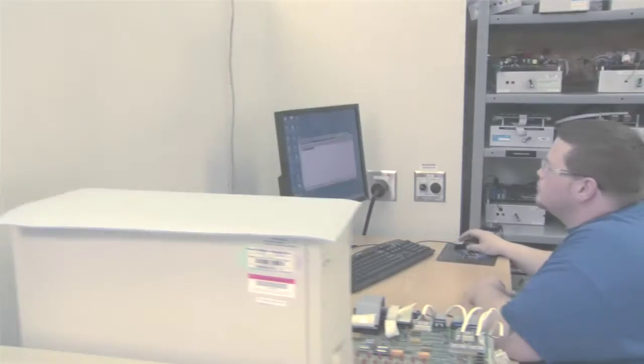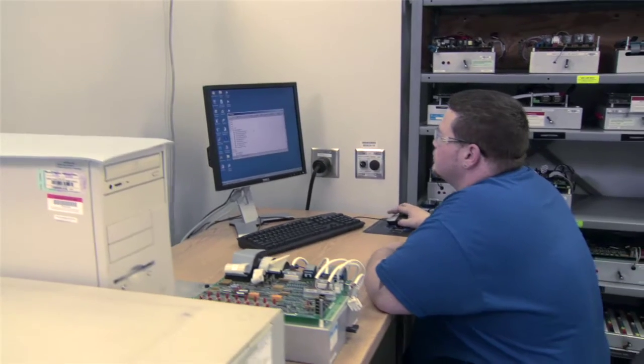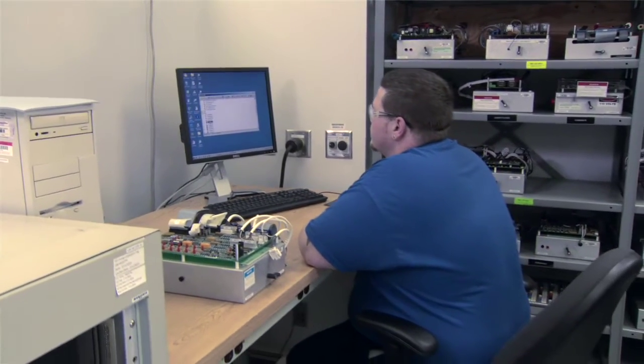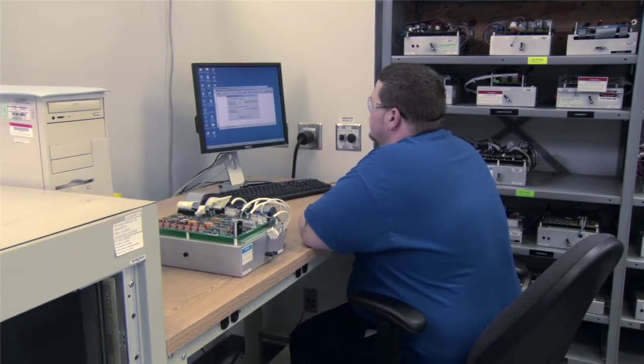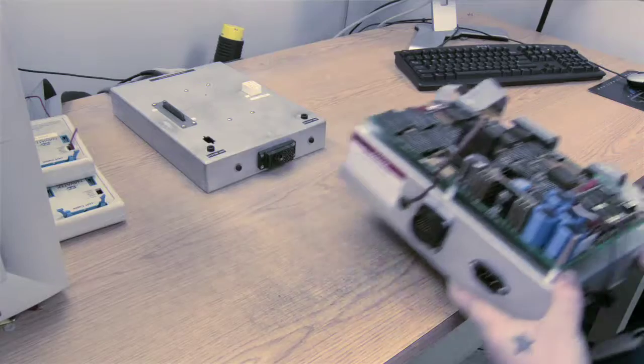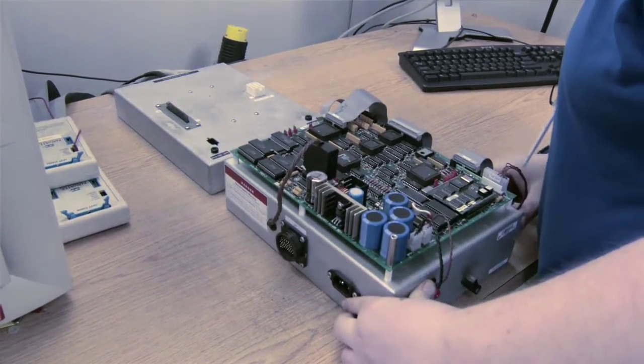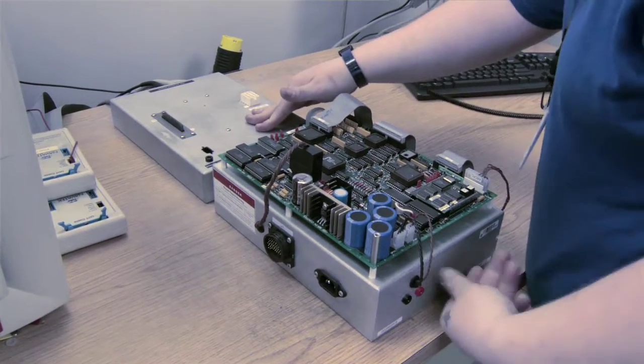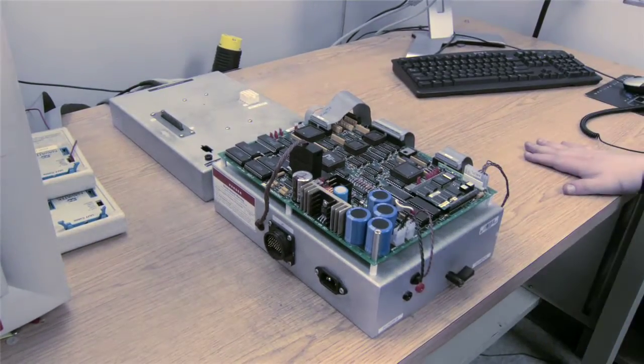At our automated test equipment station, or the ATE, we can test Mark 4 and Mark 5 controls, along with DS200 and DS3800 units. The ATE performs a full functional test that runs the board through all of its variables before we bring it over for burn-in testing.